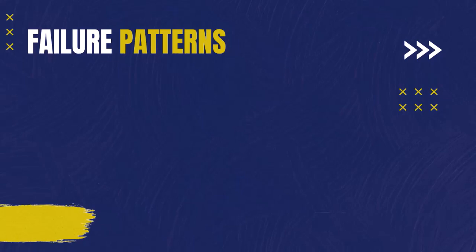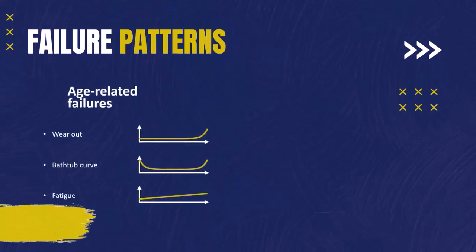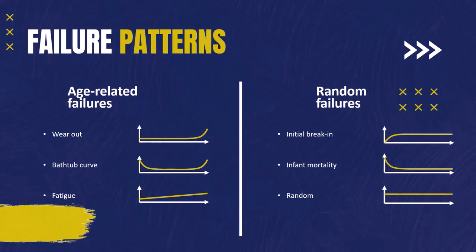We can notice something very important: these patterns can be categorized into two categories. The first category is age-related failures, consisting of three patterns — wear out, bathtub curve, and fatigue — because the hazard increases over time when we get closer to the aging zone. The other category is random failures, consisting of initial break-in, infant mortality, and random failure, because time has no effect on increasing the hazard.